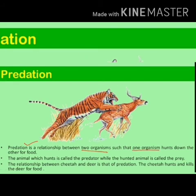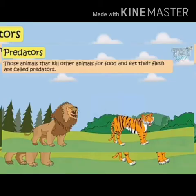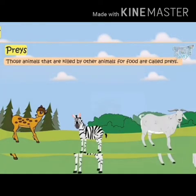First is predation. It is a relationship between two organisms such that one organism hunts down the other for food. The animal which hunts is called the predator, while the hunted animal is called the prey. The relationship between cheetah and deer is that of predation. Tigers and lions are predators — they kill other animals for food and eat their flesh. Animals that are killed by other animals for food, like deer, zebra, and goat, are called prey.